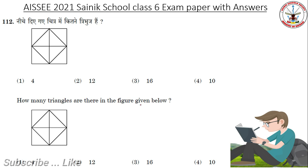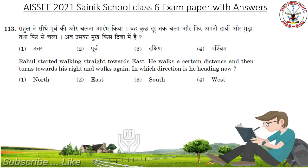How many triangles are there in the figure given below? Pause the video and count the triangles. Answer is 12 triangles. Rahul started walking straight towards East, walks a certain distance and then turns towards his right and walks again. In which direction is he heading now? Answer is South.